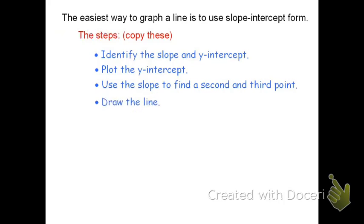Make sure the line goes through the points. If you're drawing a line, it should be straight, so use a ruler. Put arrows at the end. To recap: identify the slope and y-intercept, plot the y-intercept, use the slope to find more points, then use a ruler to draw the line.